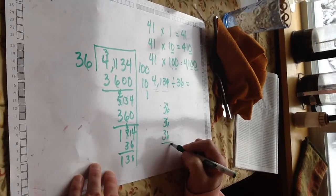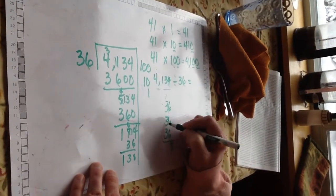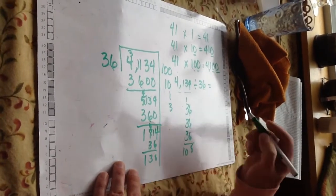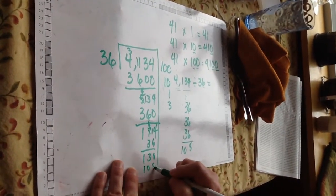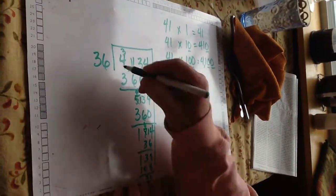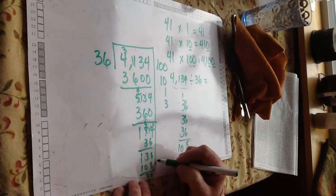3 groups would be 18. 3, 6, 9, 10. Oh, I can get 3 groups in there easily. 108, with a remainder of 30. 36 can't go into that. That's my remainder.